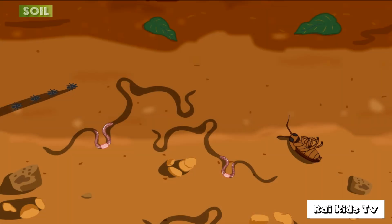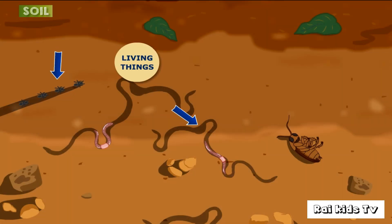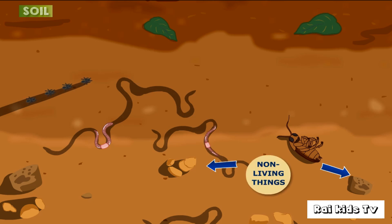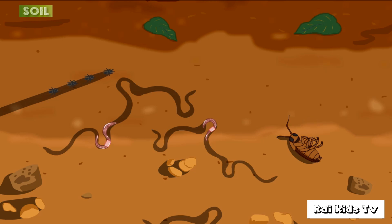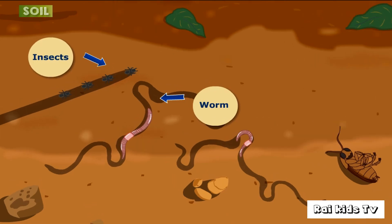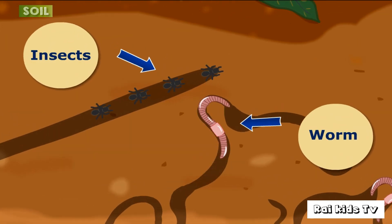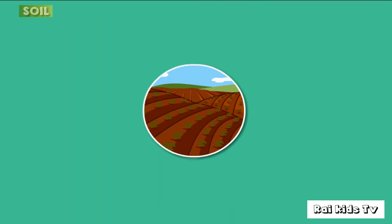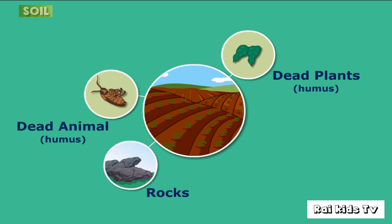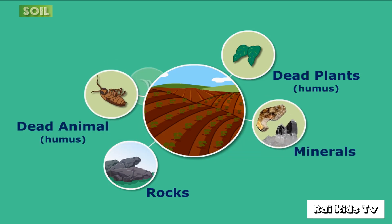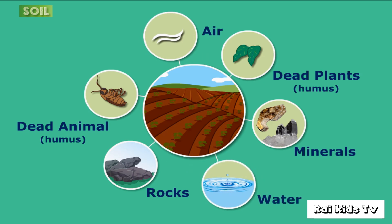Soil has living things. It also has non-living things, and it has dead things as well. It is home to living things — worms and insects. It is made up of broken down rocks, which are non-living. And it has dead plants and animals, called humus. Soil also has minerals, air and water in it.